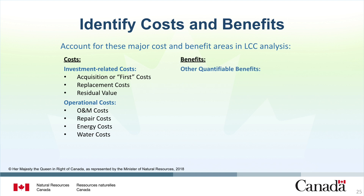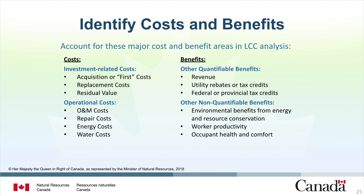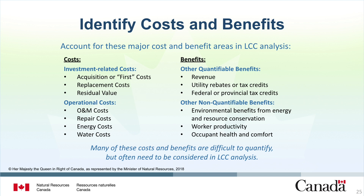Other costs or benefits can factor into the lifecycle cost analysis. These can include revenue from installing equipment that generates income, utility rebates or tax credits given for energy efficiency improvements, and federal or provincial tax credits applied to offset costs. There are also non-quantifiable costs and benefits, including environmental impacts from energy and resource conservation, work productivity, and occupant health and comfort. Many of these costs and benefits are difficult to quantify, but often need to be considered in lifecycle cost analysis.